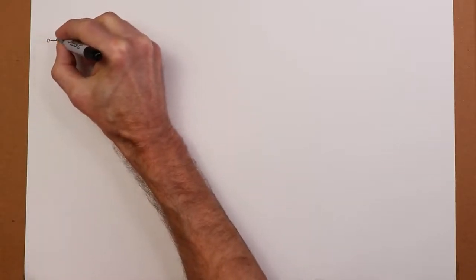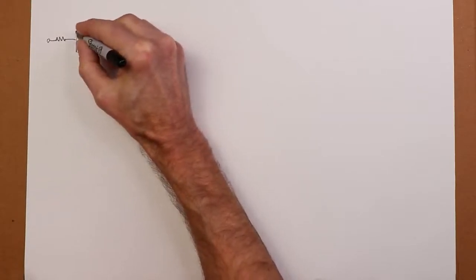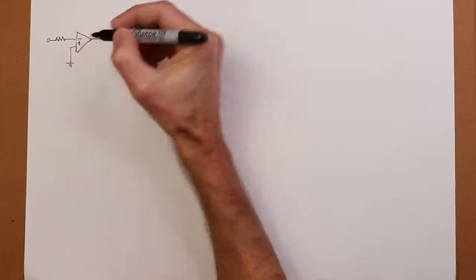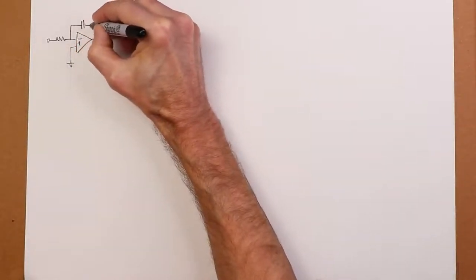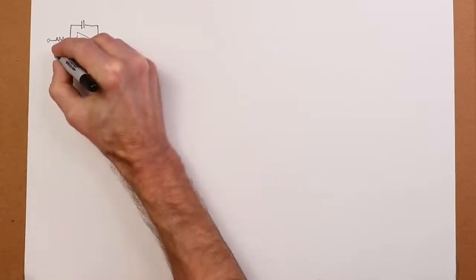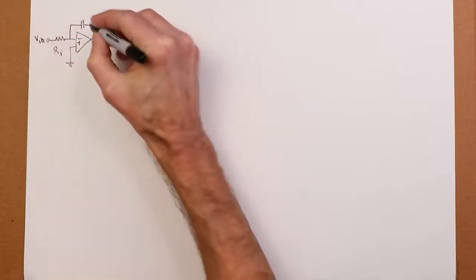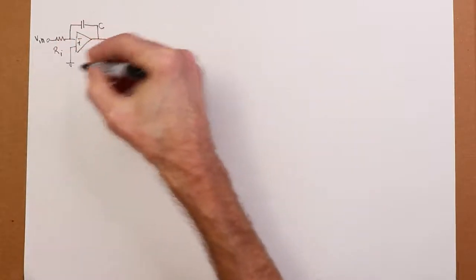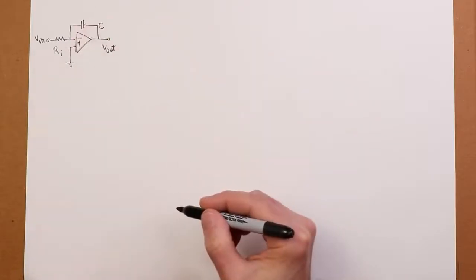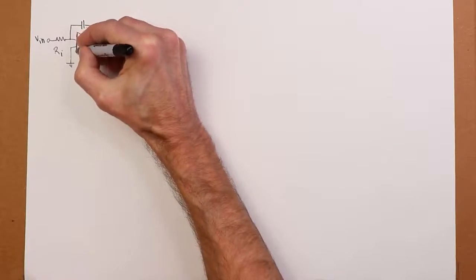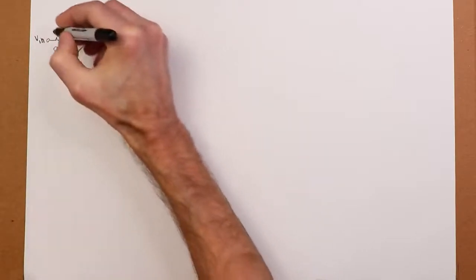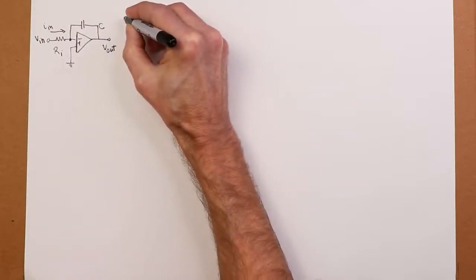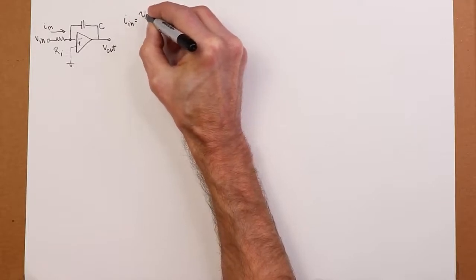So here's our basic integrator. It relies on a capacitor. We essentially have an inverting sort of amplifier, but in the RF position, there is a capacitor. So we have RI over here. Here's VN. We have this capacitor, C, and of course, Vout's over there. So we want to create an expression to describe what's going on here as far as Vout and Vin.